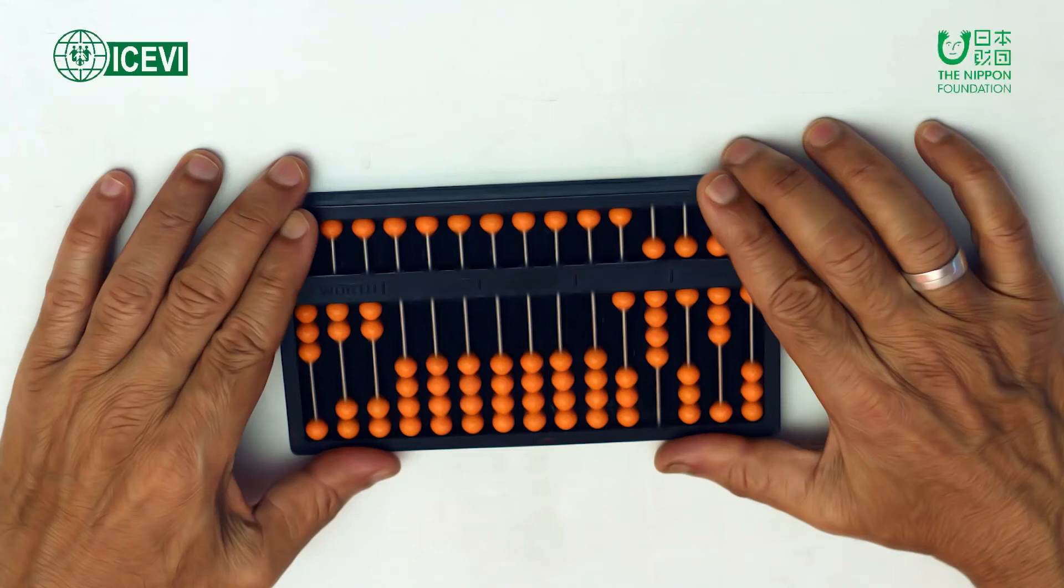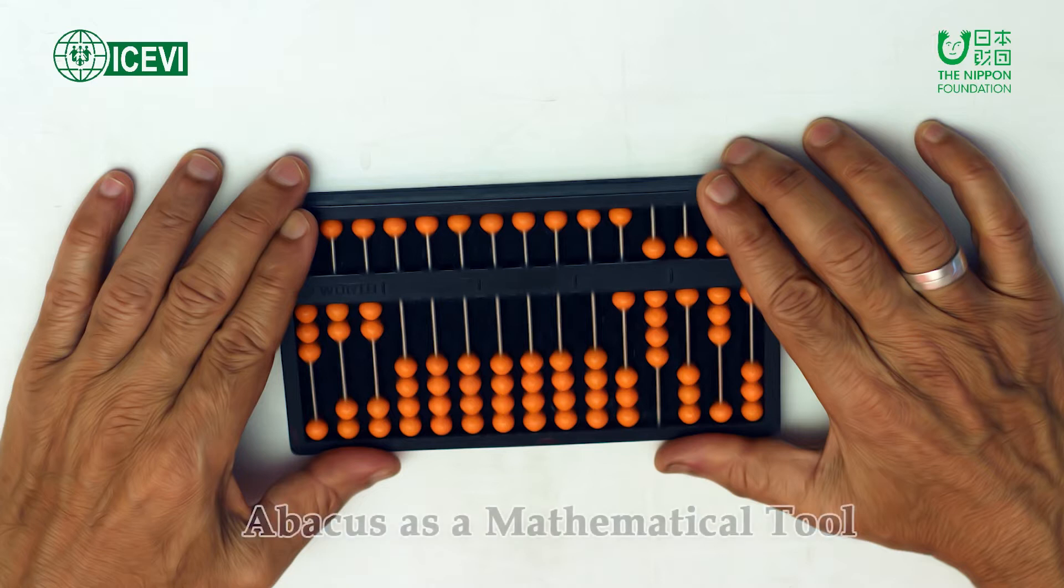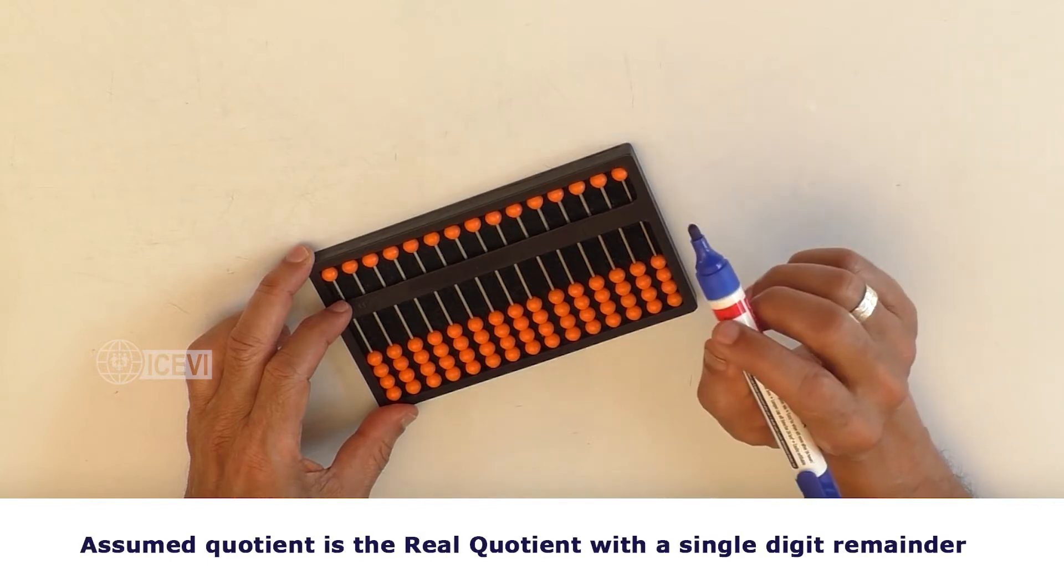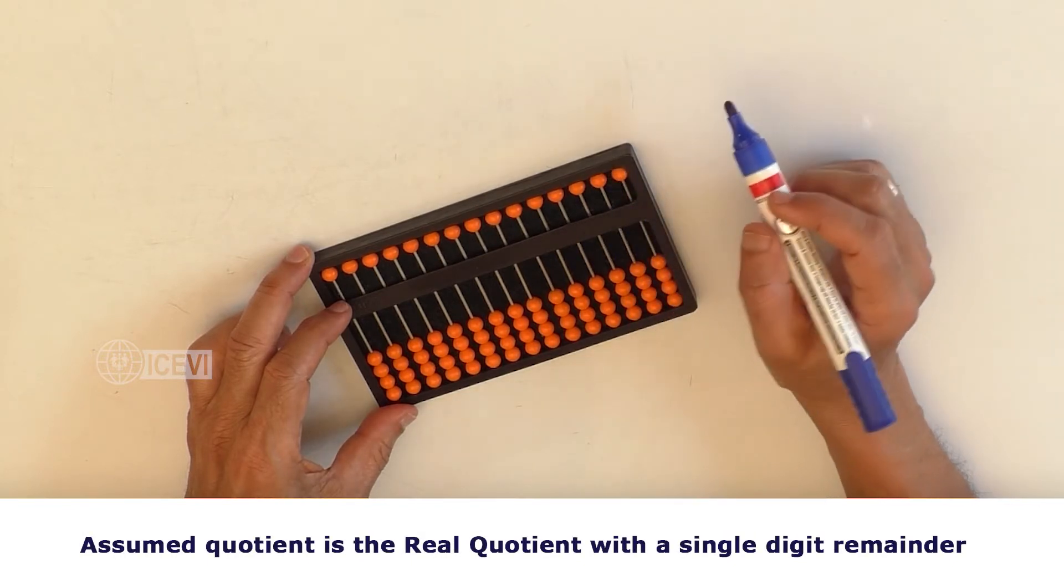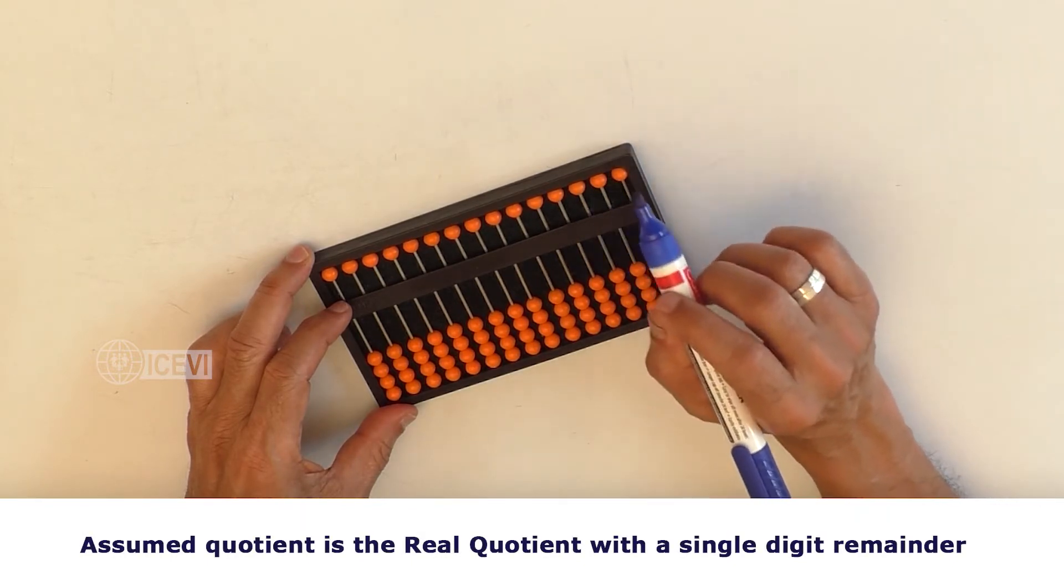The ICEVI, the Nippon Foundation, Mathematics Package for Teachers, Video Series, Abacus as a Mathematical Tool. Title of the video: Assumed Quotient is the Real Quotient with a Single Digit Remainder.